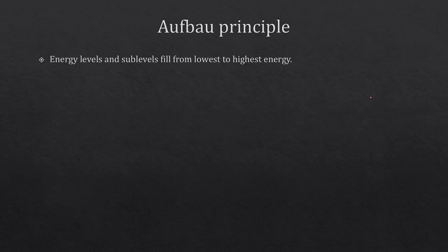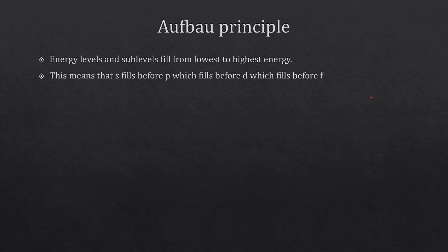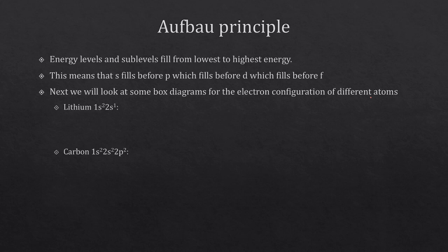The lowest energy sub-levels are the easiest to get into, so that's where the electrons start. What this means is that s has to fill before p, which has to fill before d, which has to fill before f, when things are in the same energy level. So let's look at what this looks like for a box diagram.